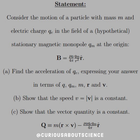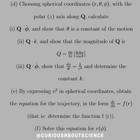Part A: find the acceleration of Qe, expressing your answer in terms of Qe, Qm, M, R, and V. Part B: show that the speed V is equal to the magnitude of the velocity and that it's a constant. Part C: show that this vector quantity is also a constant — Q equals M R-cross-V minus mu-naught Qe Qm over 4pi in the R-hat direction.